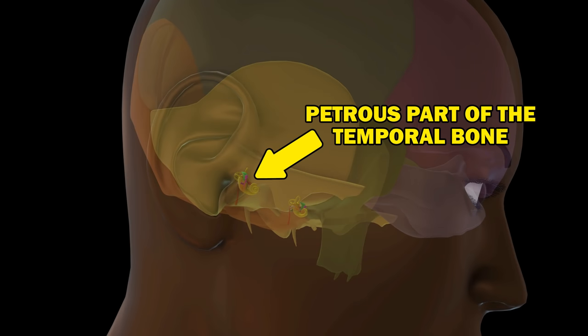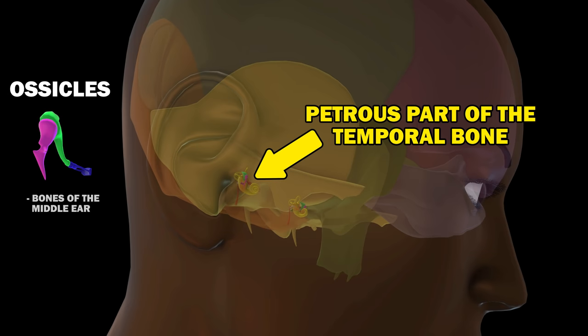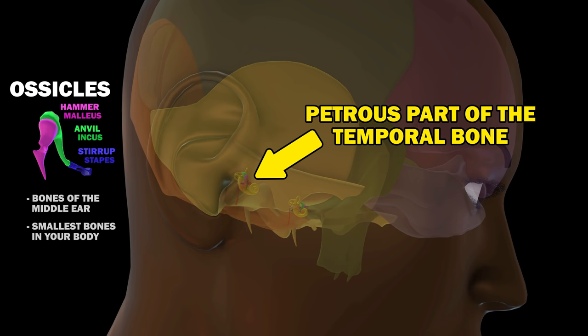It is inside the petrous part of the temporal bone that we find the ossicles. These are the bones of the middle ear and are the smallest bones in your body. A set of three ossicles is found on each side of your head, so there are six ossicles in total. These bones include the hammer, anvil, and stirrup — also called the malleus, incus, and stapes.